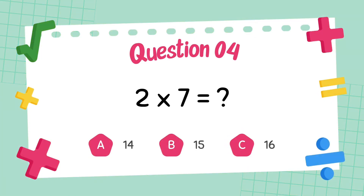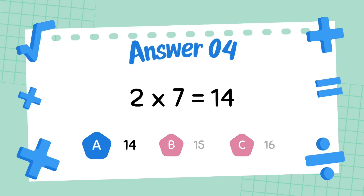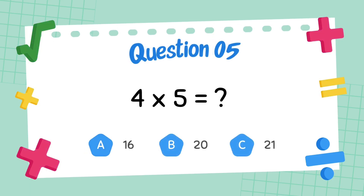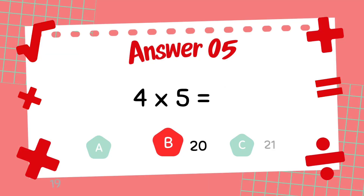What is 2 multiply 7? The answer is 14. What is 4 multiply 5? The answer is 20.